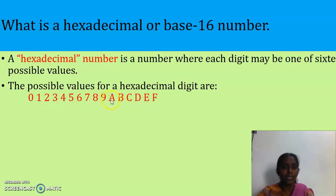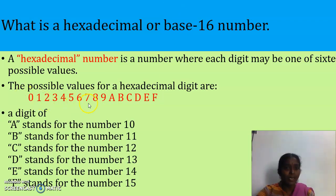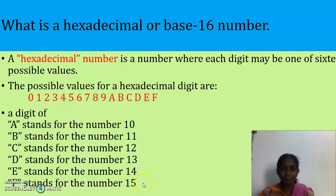We have to use only the capital letters range. So what is A? A stands for the number 10, B for 11, C for 12, D for 13, E for 14, F for 15.